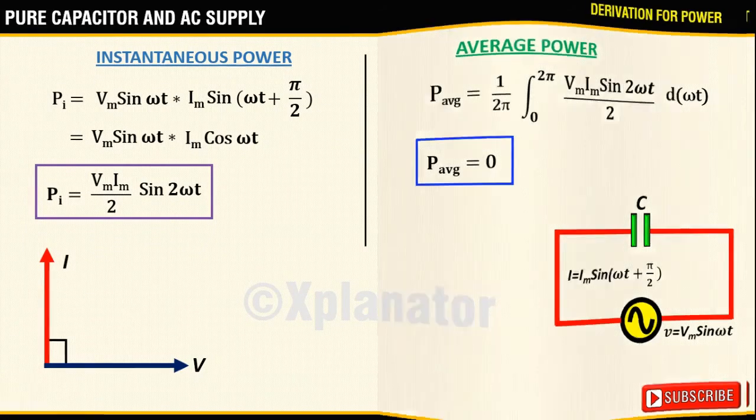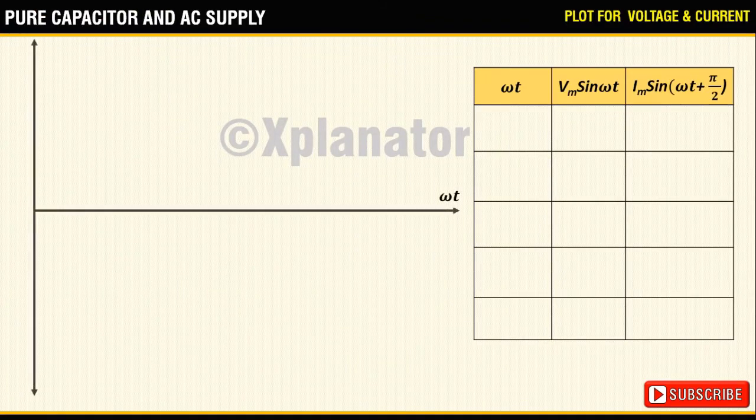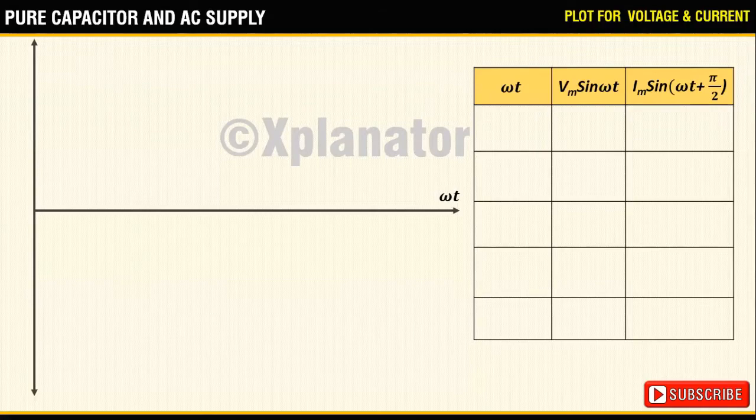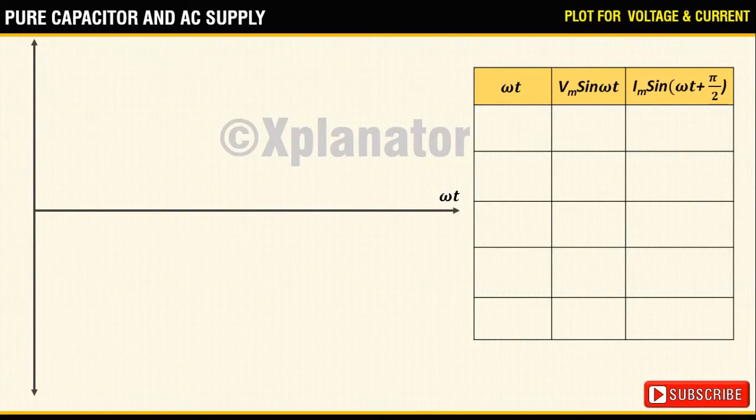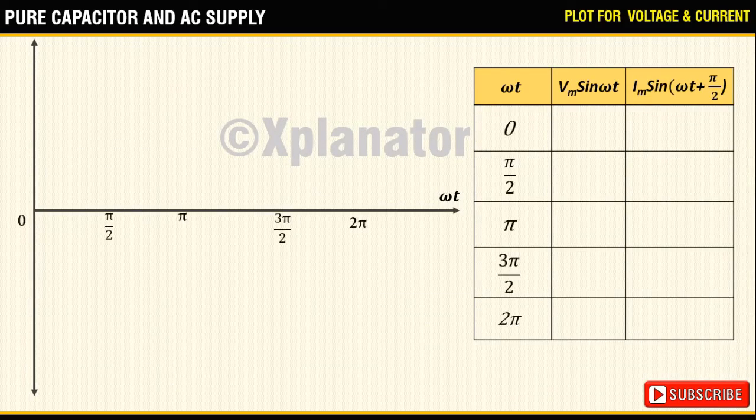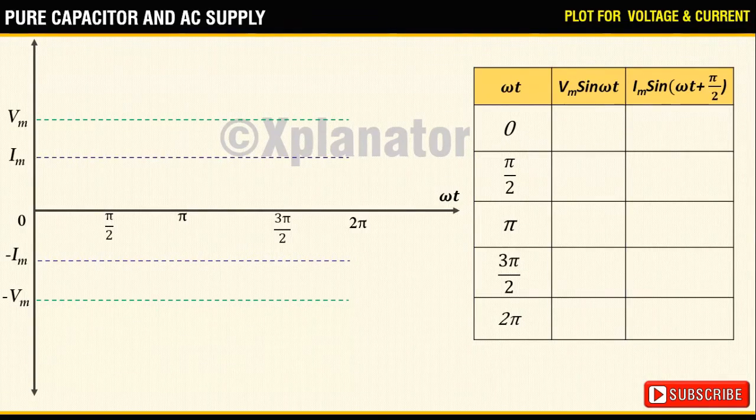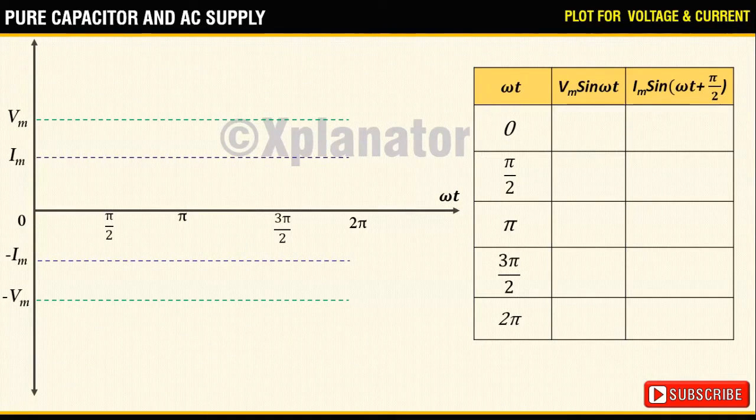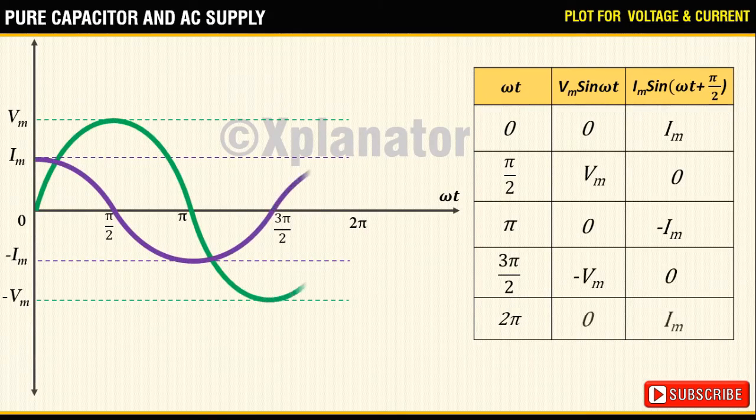Next to plot the waveform, consider an xy plane with omega t, the angular frequency on the x-axis. Draw a table to plot the voltage and current waves. Mark the values of omega t on x-axis, voltage and current on y-axis. Tabulate the different values of voltage and current at different intervals of omega t and draw the corresponding plots.